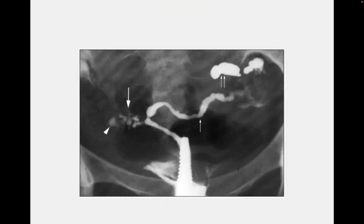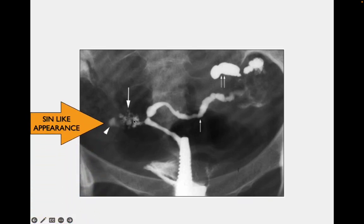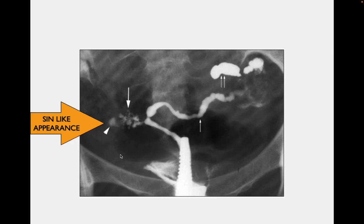In this picture you can see a salpingitis isthmica nodosa (SIN)-like appearance. In SIN, the mucosa of the isthmus forms diverticula that extend into the muscular part of the fallopian tube, especially in the isthmic region. 'Salpingitis' means inflammation of the tube, 'isthmica' because it involves the isthmic region, and 'nodosa' reflects the nodular nature.